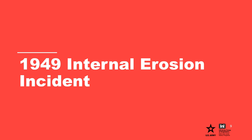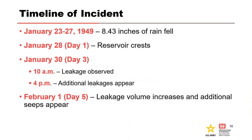From January 23rd to the 27th in 1949, 8.43 inches of rain fell in the watershed. On January 28th, the reservoir crested at elevation 493.5 feet, about 50% of the embankment height, and it remained there for 12 hours, then slowly began to fall. Two days later, leakage was observed in the morning at Station 9+09 on the downstream slope, approximately 5 to 10 feet above the toe. A number of leaks developed later in the afternoon from Station 4 to Station 10 with an estimated flow of 5 CFS.